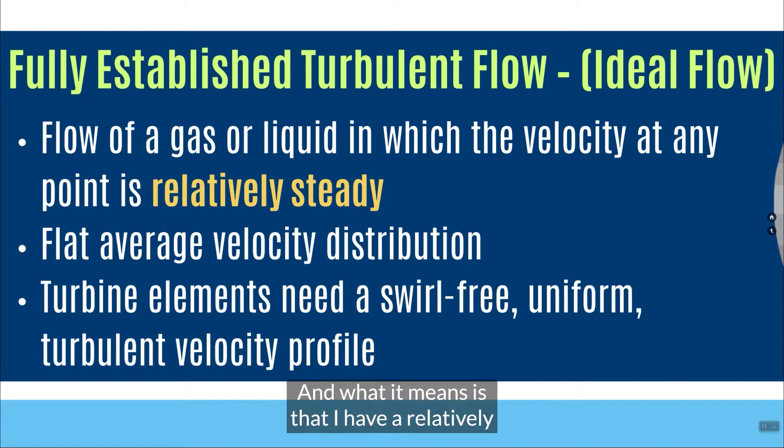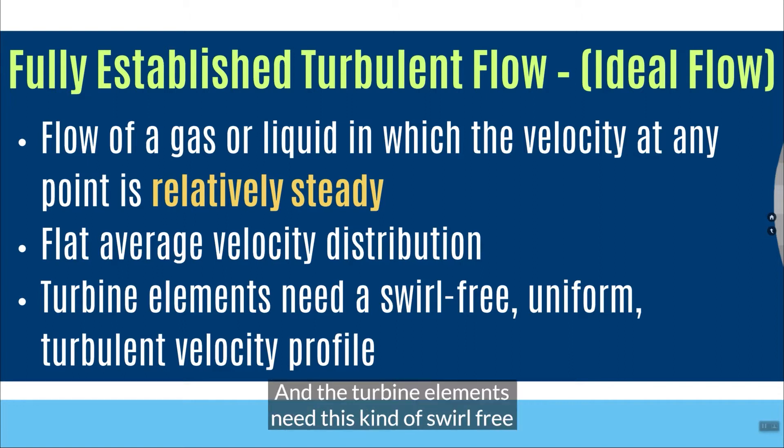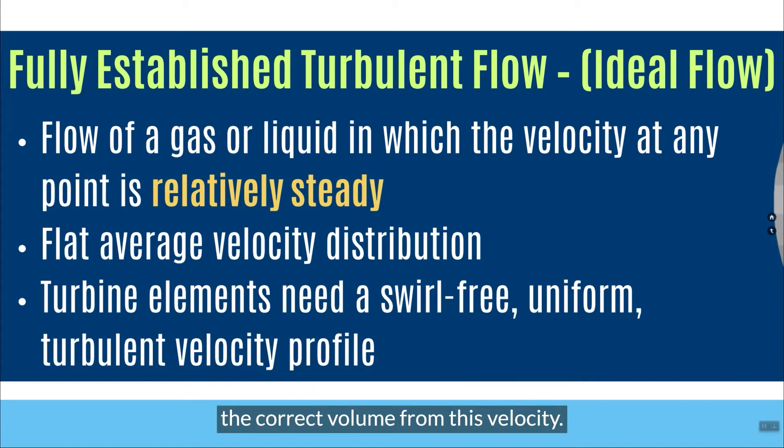And what it means is that I have a relatively steady velocity across the pipe section. And I'm going to show you a picture of that in a second. The average velocity is somewhat flat. It's not skewed. And the turbine elements need this kind of swirl-free, uniform, turbulent velocity profile in order to infer the correct volume from this velocity.